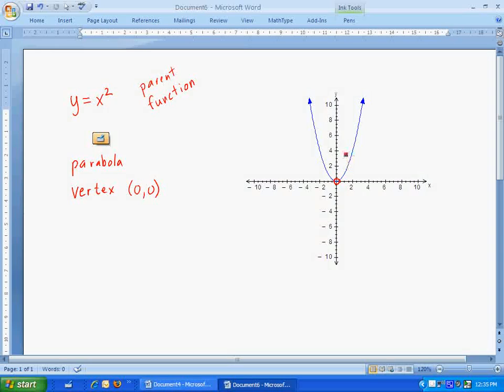Now some other important points on our graph. With this one, they're all going to end up being the same point because it is a parent function. But we always pay attention to the x-intercepts. And we've talked about x-intercepts before when we did linear graphs. The x-intercepts are the places where y equals 0 or where it crosses the x-axis. You can see again that's going to be the same point, that same vertex.